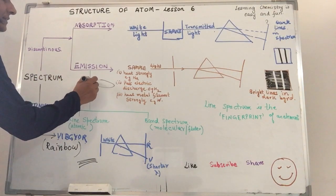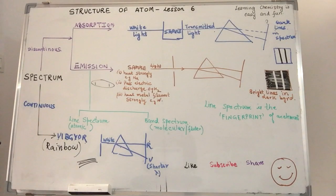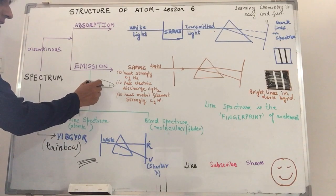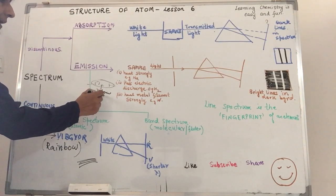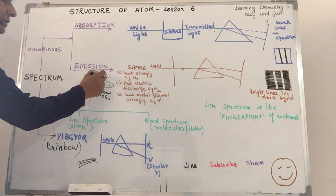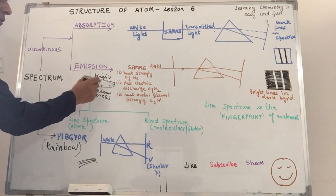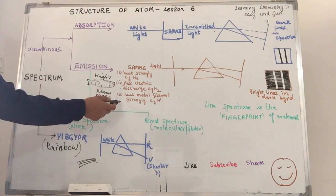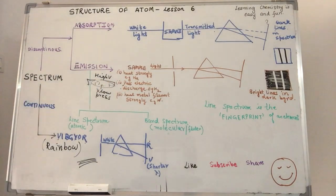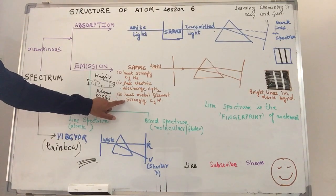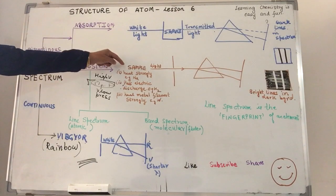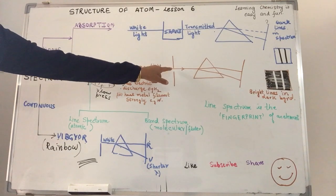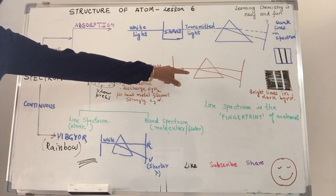You can also excite the sample by passing electric discharge through the sample. For example, I have got hydrogen gas. Just go back to lesson one where we talked about the discharge tube experiment by J.J. Thompson. We had taken a gas at very low pressure and applied a high potential across the two ends of the plate in order to excite the gas. So you can either pass electric discharge through the sample if it is a gas or we take if the sample is a metal, we heat the metal filament very strongly. Now in each of these cases, the sample gets excited.